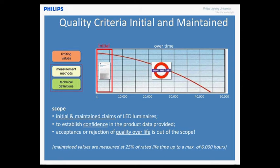What you will see is that the IEC document focuses mainly on initial and maintained claims, because they take into account a period of 6,000 hours - that's why they call it maintained. But the only objective is to establish confidence in the data provided by the luminaire manufacturer. At this moment, quality over time or quality over life is not in the scope of the international standard. The most important reason is that there are still too many things uncertain. The technology is quite young and we simply can't oversee, when you bring a product to market with an expected life of 10, 15, maybe 20 years, what will happen over that time. But you will find an informative annex that gives guidance on how you should look at lifetime metrics over time.